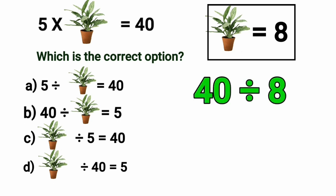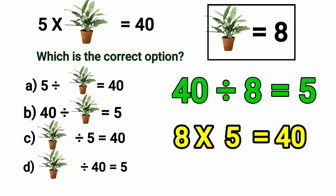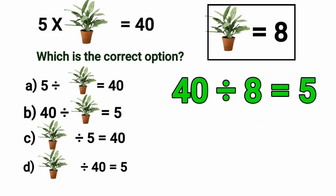When do we get 40 in 8's table? Yes, 8 5's are 40. 8 multiplied by 5 is equal to 40. So, 40 divided by 8 is equal to 5. Option B is the correct option. And we will put a tick mark at option B.